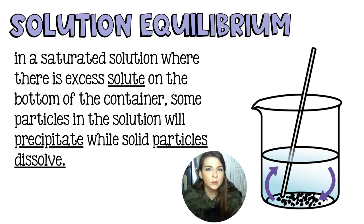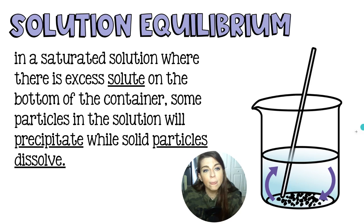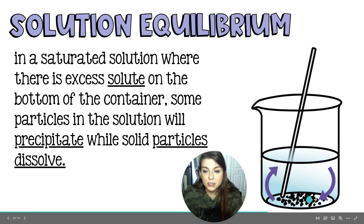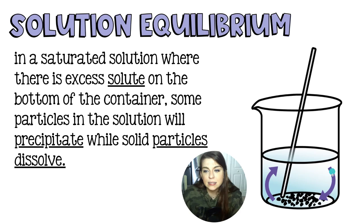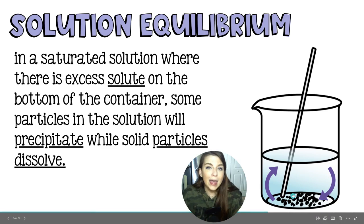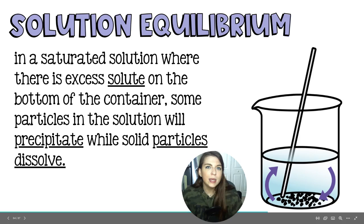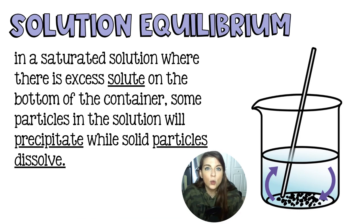The third and final type of equilibrium is called solution equilibrium, and that is where we have a saturated solution. The solution must be saturated, and we'll have some excess solute sitting on the bottom of the container. Some particles from the solution are going to undissolve or precipitate and sink to the bottom, and in that exact moment, a particle from the bottom will dissolve and become part of the solution. We can actually watch this happen with something called a tracer.